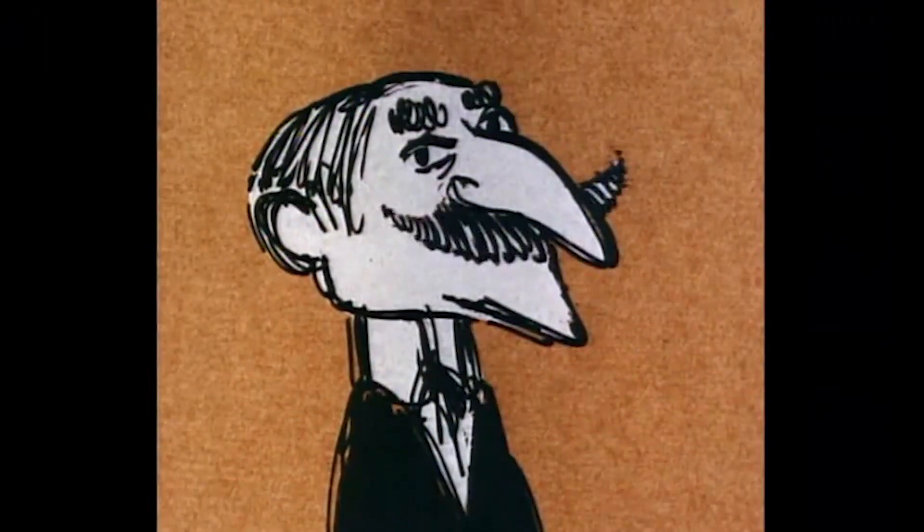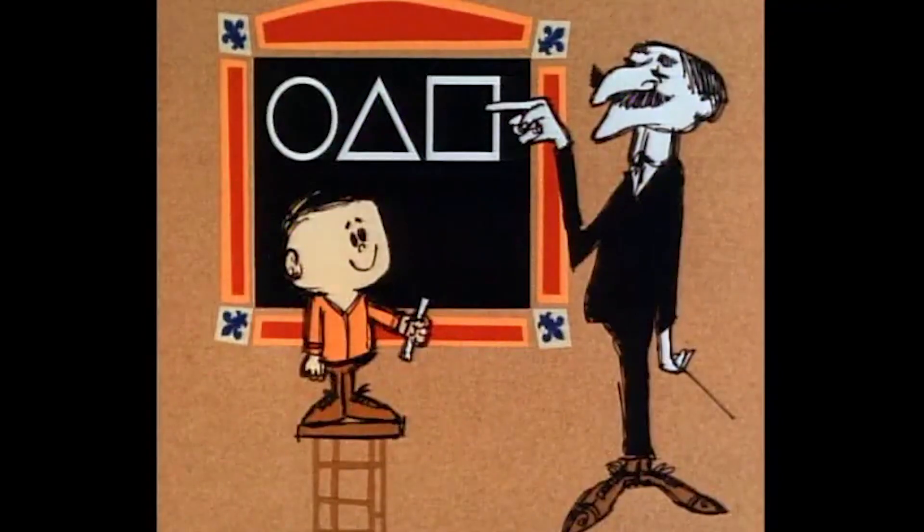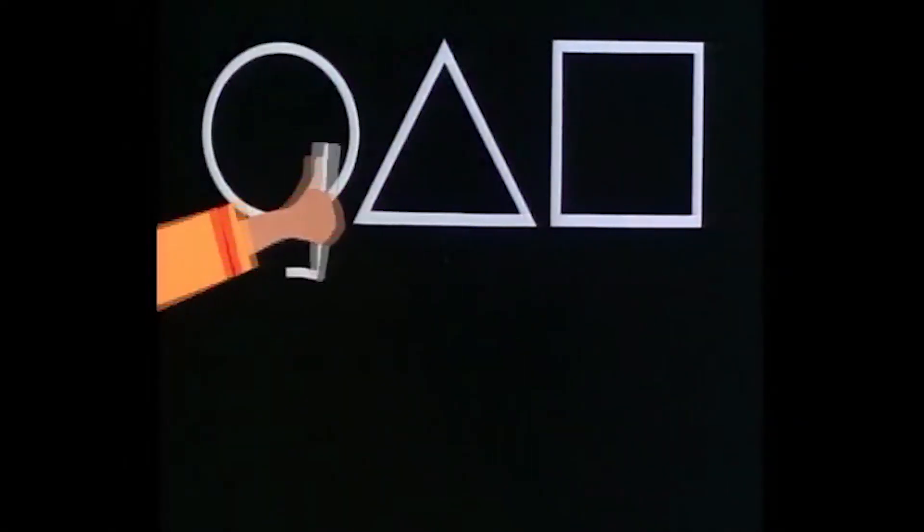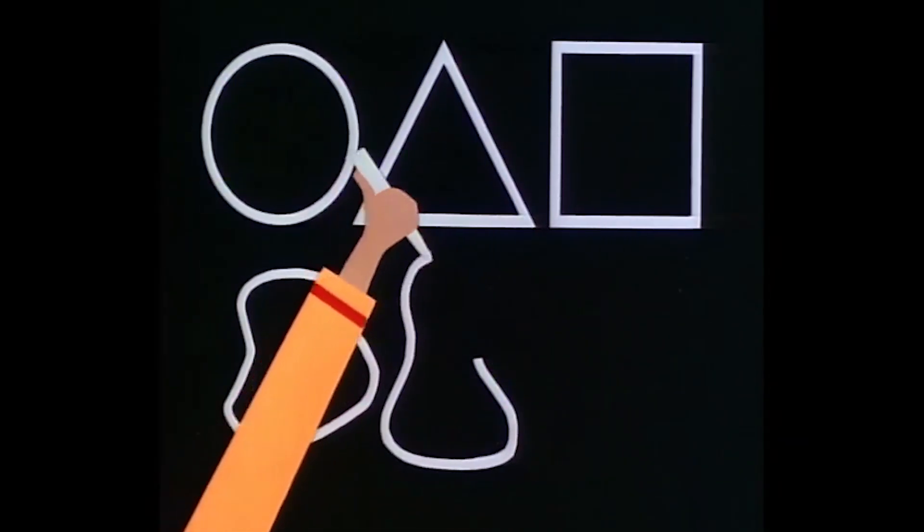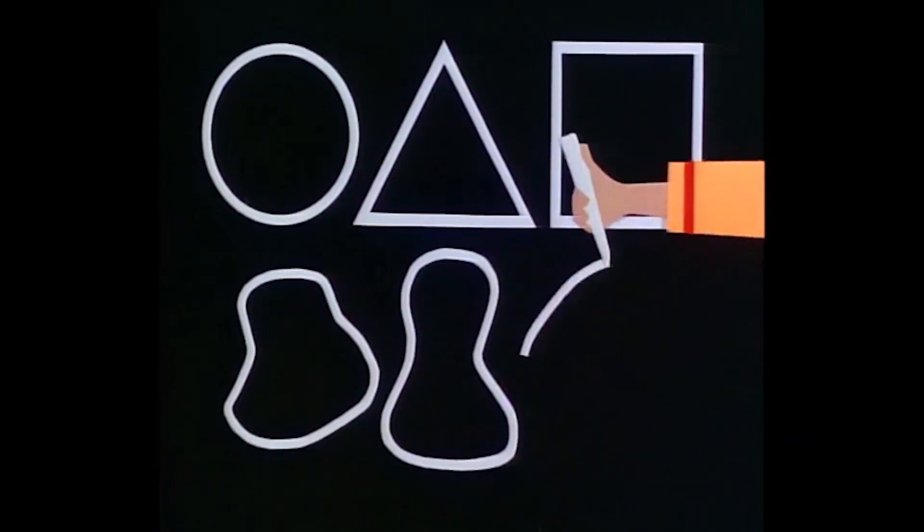If we ask a young child to copy these forms, he is apt to produce a series of related blobs. And when he does, he is unconsciously recognizing the fundamental similarity between these shapes.